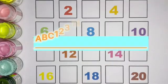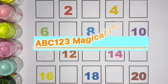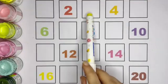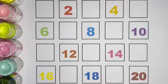Hello kids, welcome to ABC 123 Magical Learning. Let's find out missing numbers 1 to 20 with different colors.